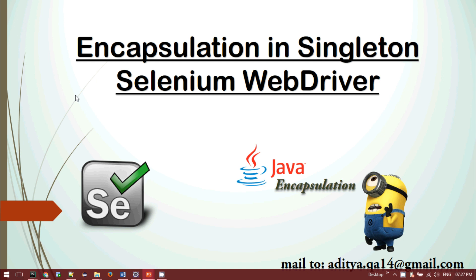We already know what encapsulation is — it's basically data hiding. So suppose your class has some private variables; if you want to access those private variables, we need to declare getter and setter methods through which we can access those variables from outer classes. We will be doing a similar thing for a singleton design pattern in Selenium WebDriver.